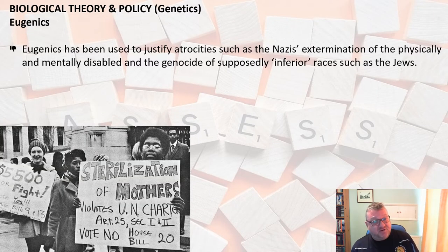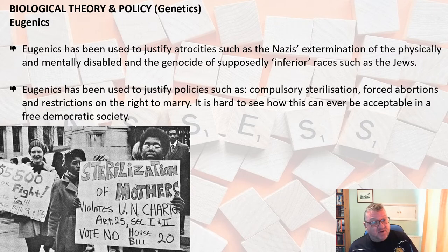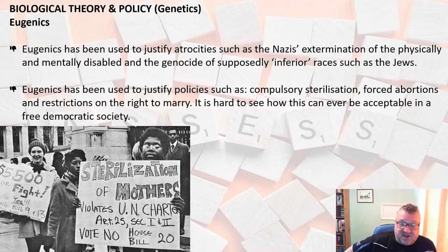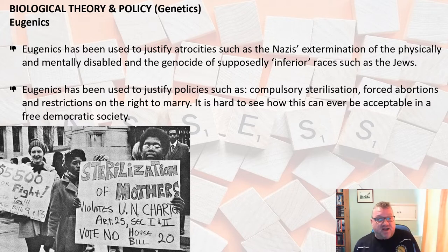To sum up eugenics, there's nothing positive to say about it. It was used to justify atrocities such as the extermination of the physically and mentally disabled and genocide of supposedly inferior races. It justified compulsory sterilisation, forced abortions, and restrictions on the right to marry. It's very hard to see how any free democratic society would adopt such policies today, but it happened just under 100 years ago in America and later in Nazi Germany.